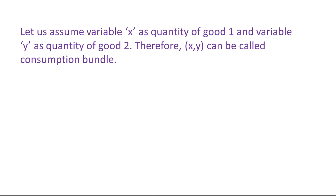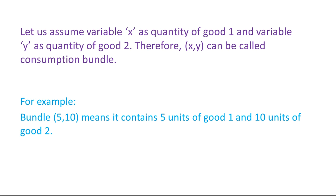Let us assume variable X as the quantity of good one and variable Y as the quantity of good two. Therefore, we can say that (X, Y) can be called a consumption bundle. For example, if we have a bundle (5, 10), that means it contains five units of good one and ten units of good two.